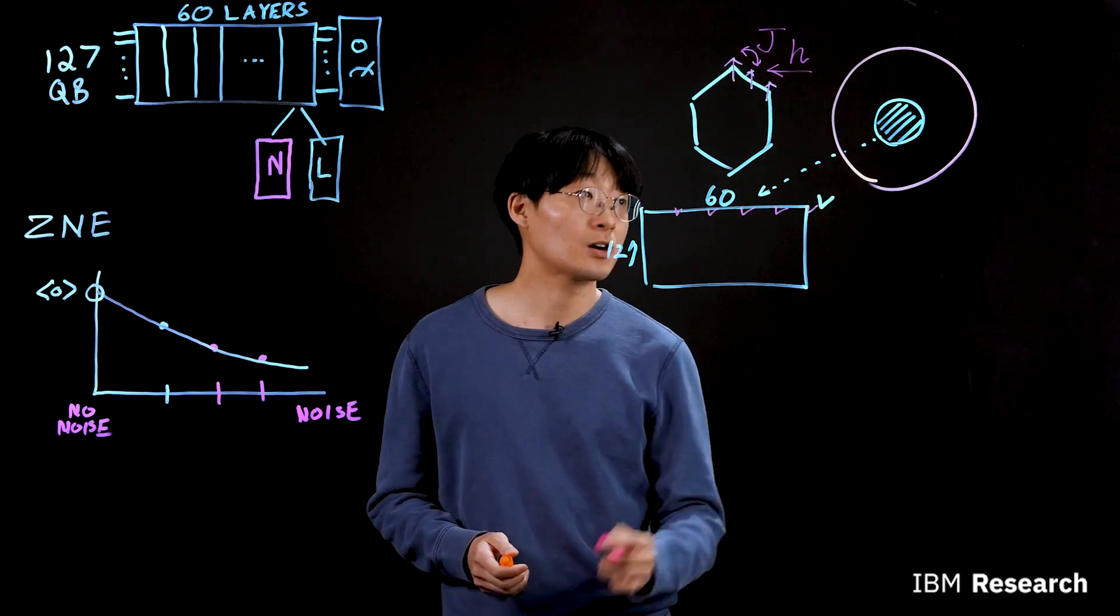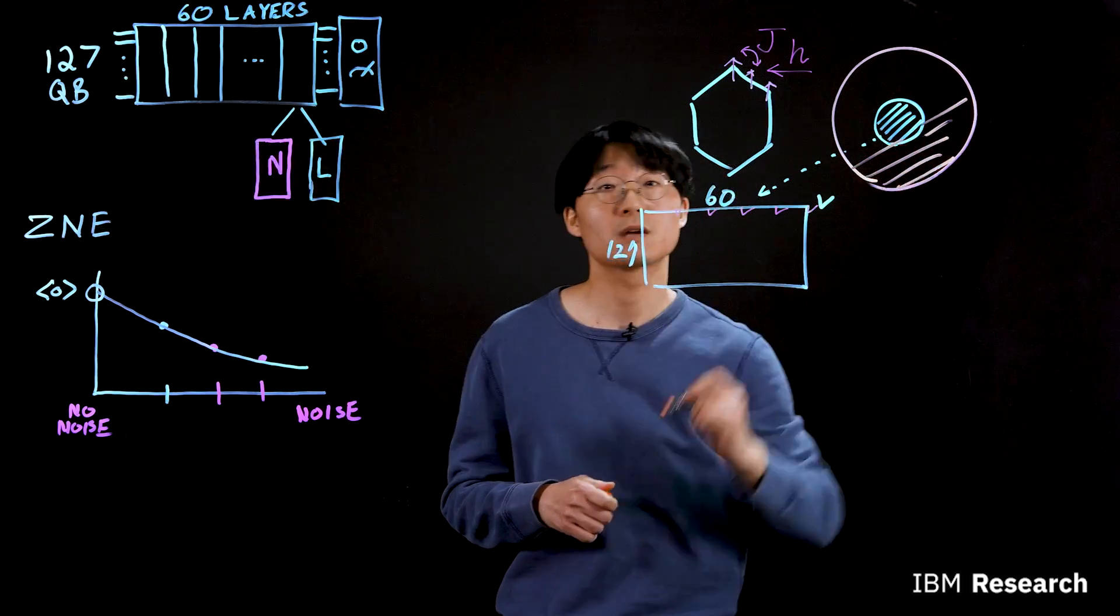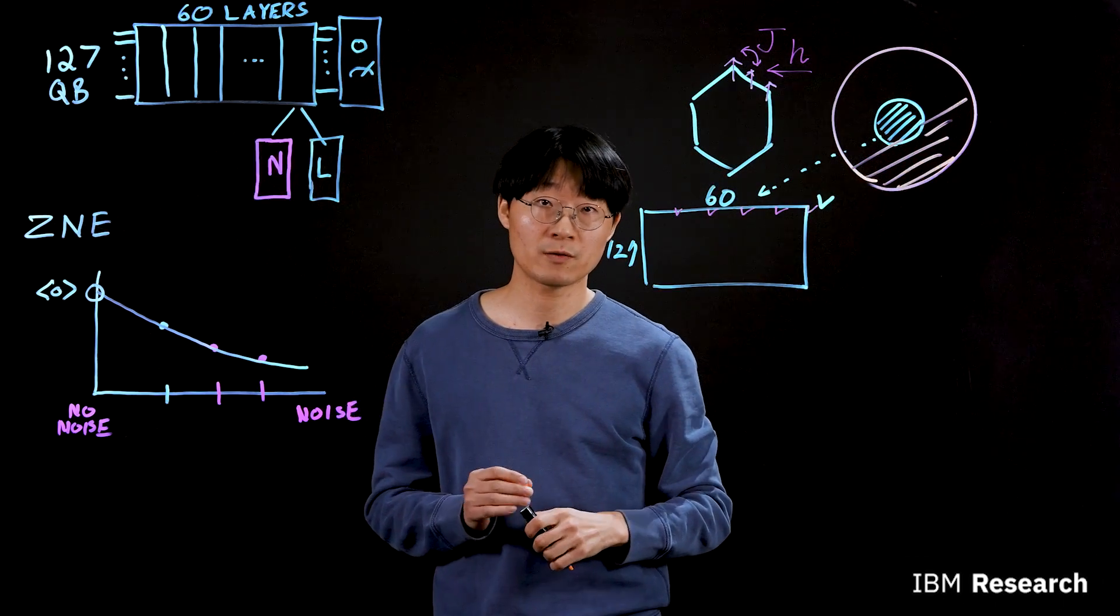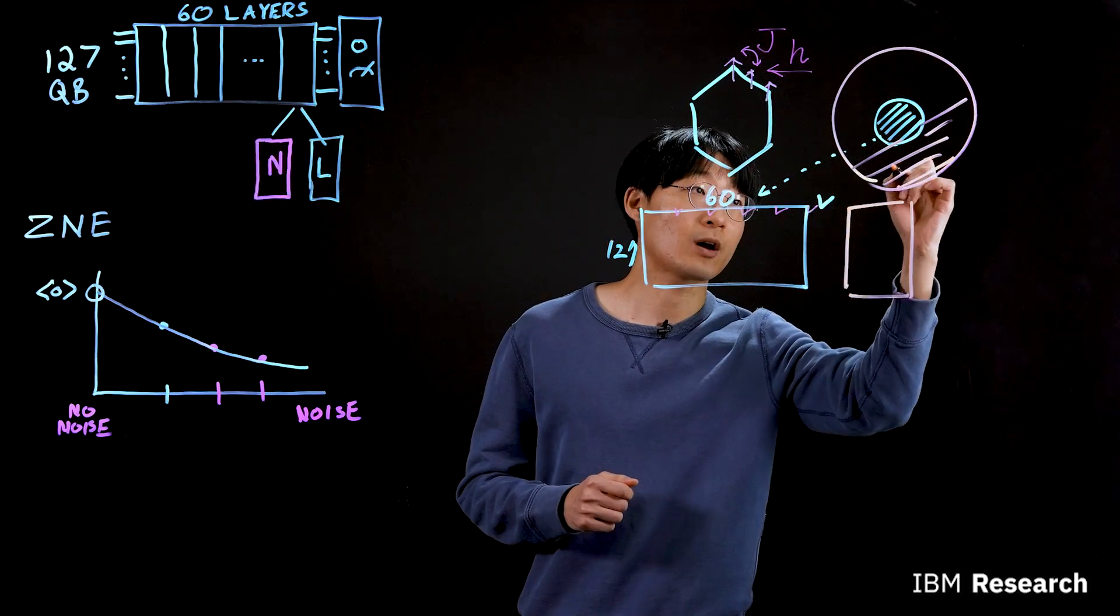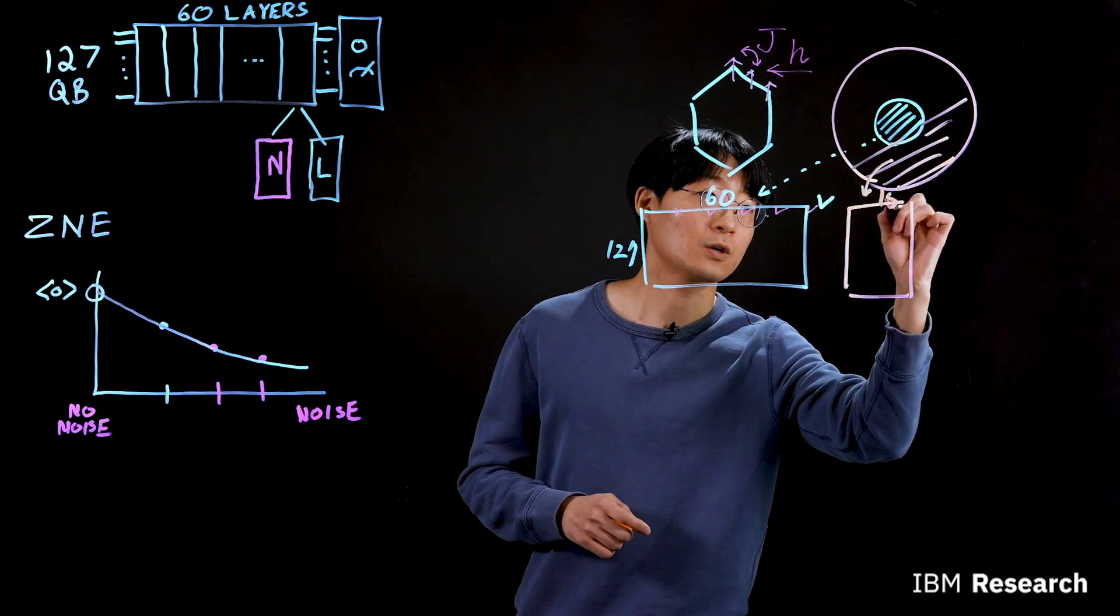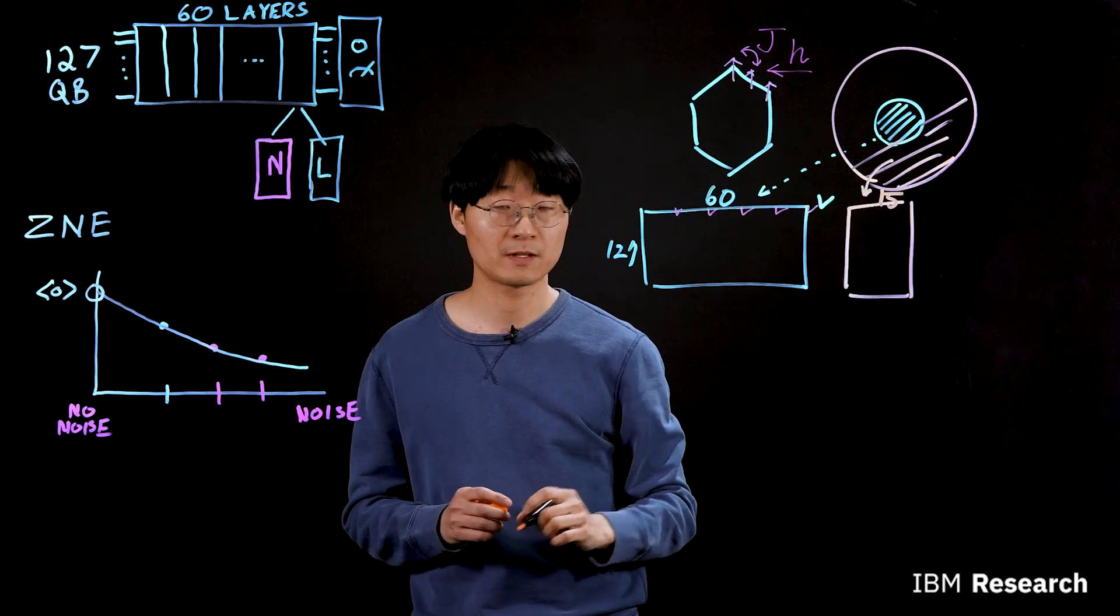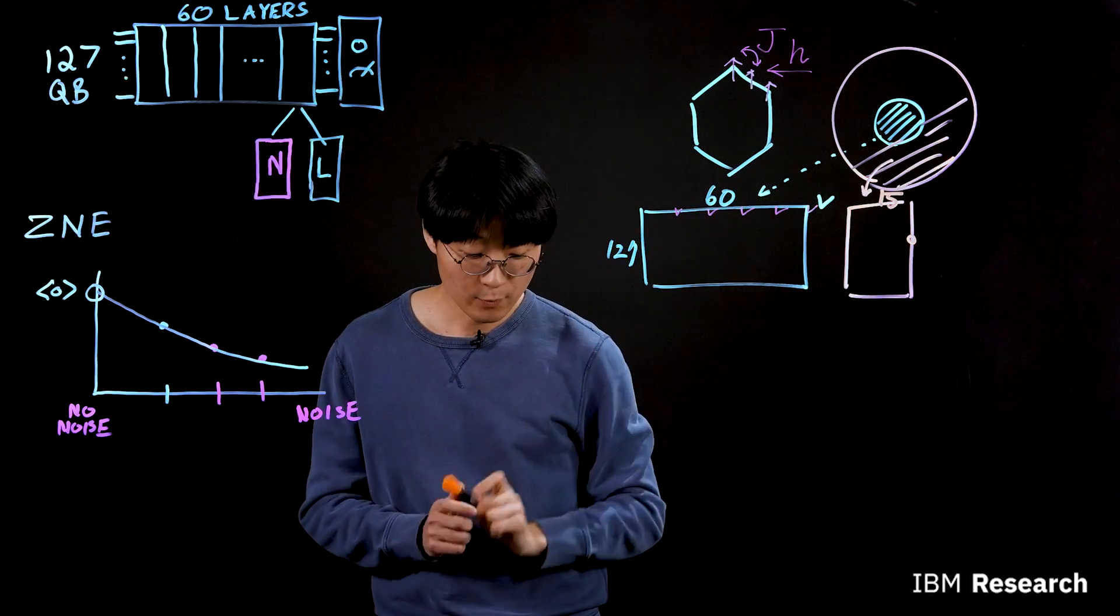Of course, there are large parameter space which results in non-Clifford circuit, which is in general hard to verify. Instead, what we did is we take the parameter that results in non-Clifford circuit. We go shallower circuit, depth 15, and we examine low weight observable.